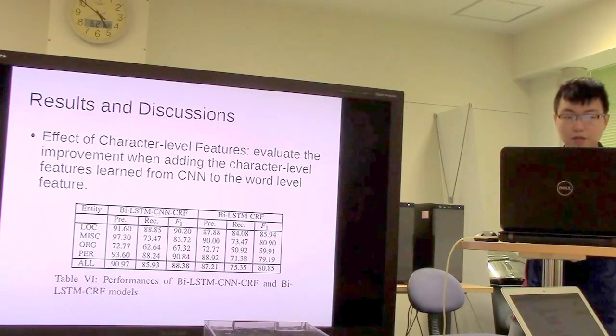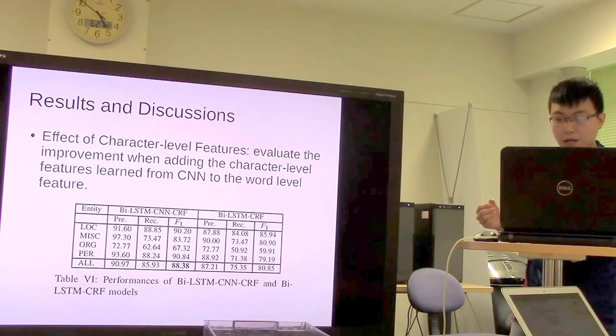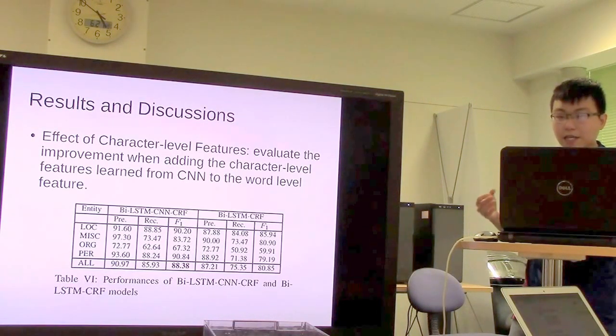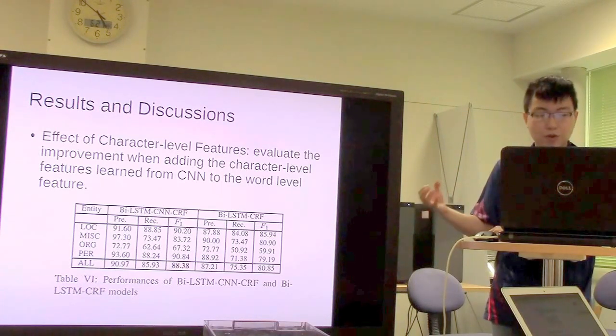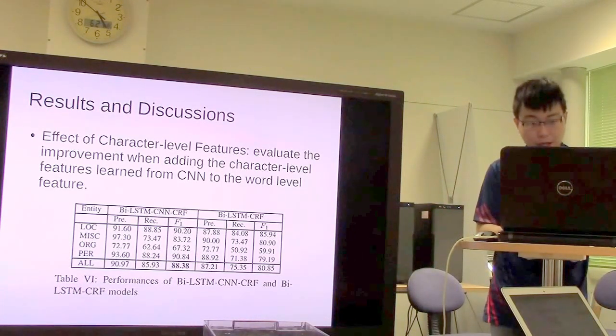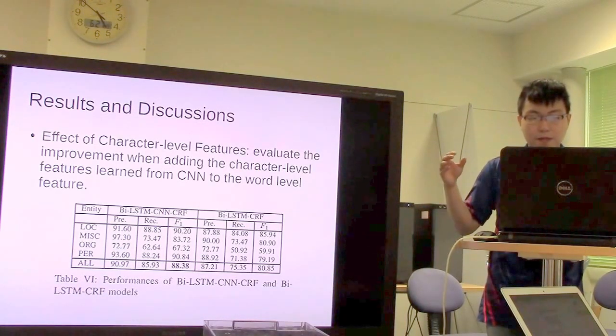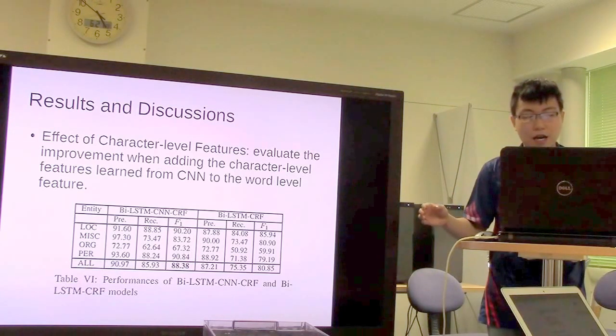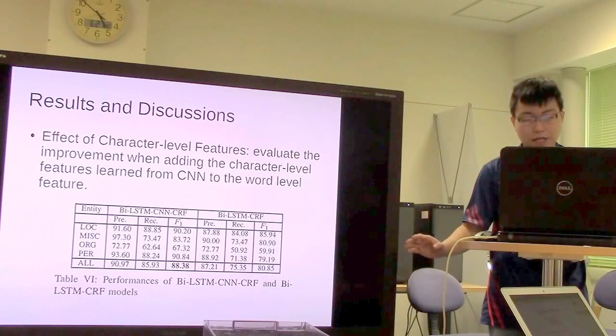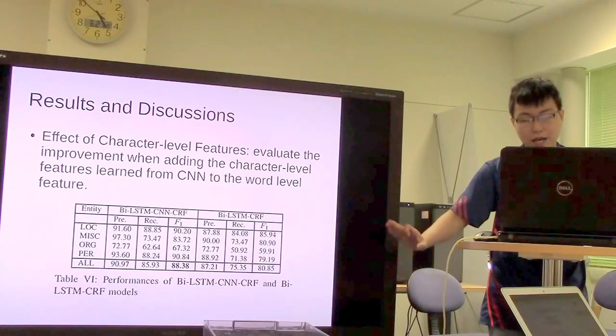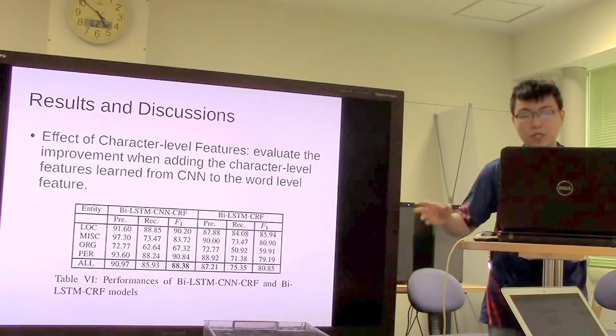In the next experiment, they examine the effect of character-level features. They add character-level features learned from the CNN model into the word-level features. This table shows that adding character-level learning from the CNN model achieves the highest score compared to models that don't use character-level features.